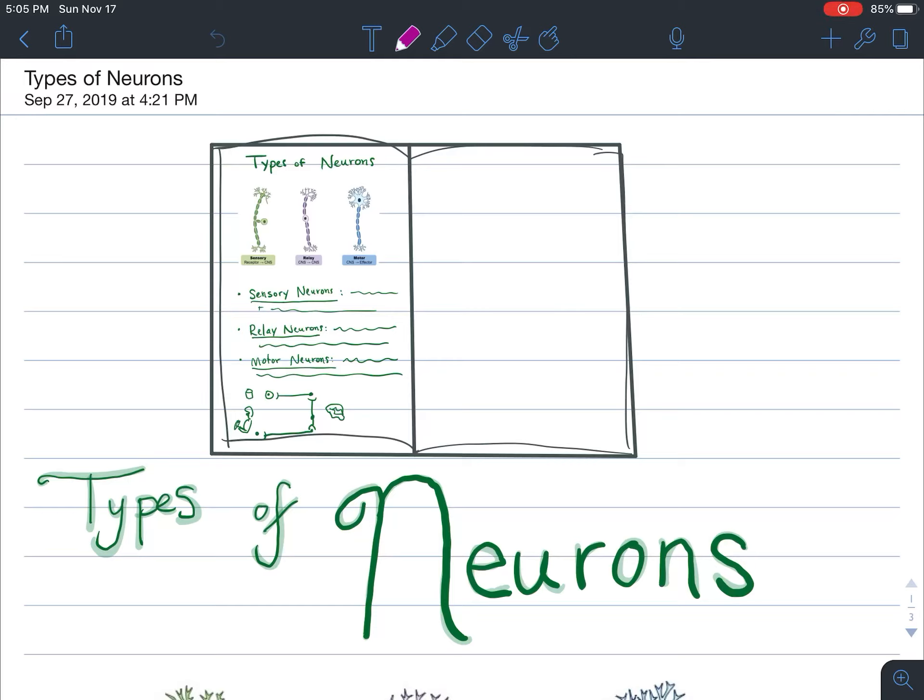What up, SciFan? It's your boy, Nickel. And this time, we're going to learn about different types of neurons. There are basically three classes of neurons that we're going to analyze.